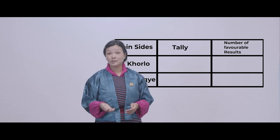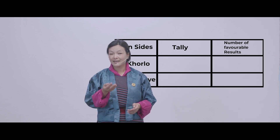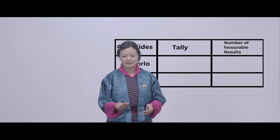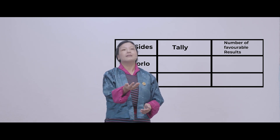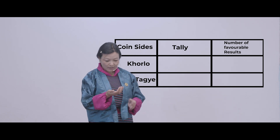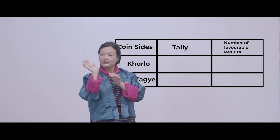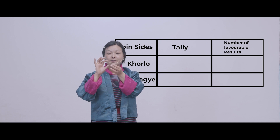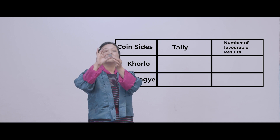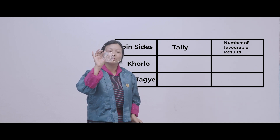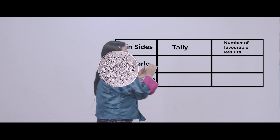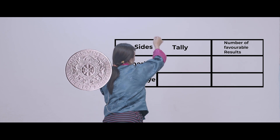Now I am going to do the trials — throw the coin. Can you see here? It is khorlo. So I will mark in khorlo.